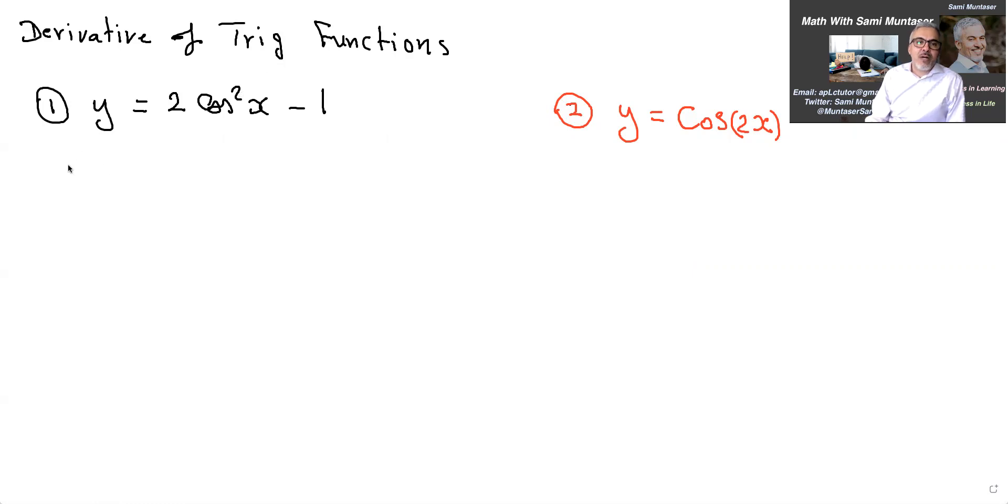I'm going to answer this one in red. To do y prime here, the first thing we need to do is bring the two down and I'm going to get 4 cos x. Now I have to take the derivative of cos x, which is negative sine x.